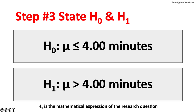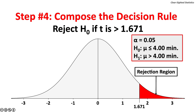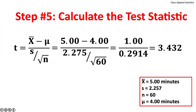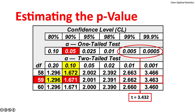Step 3: State the null and alternate hypotheses. Null hypothesis: the population mean is less than or equal to 4 minutes. Alternate hypothesis: the population mean is greater than 4 minutes. Step 4: Compose the decision rule — reject the null hypothesis if T is greater than 1.671. Step 5: Calculate the test statistic. The formula for T is very similar to Z: sampling error over the standard error of the mean, but the sample standard deviation replaces the population standard deviation. The value of the T test statistic is 3.432. The estimated p-value from the Student T table would be less than 0.5% and greater than 0.05%.